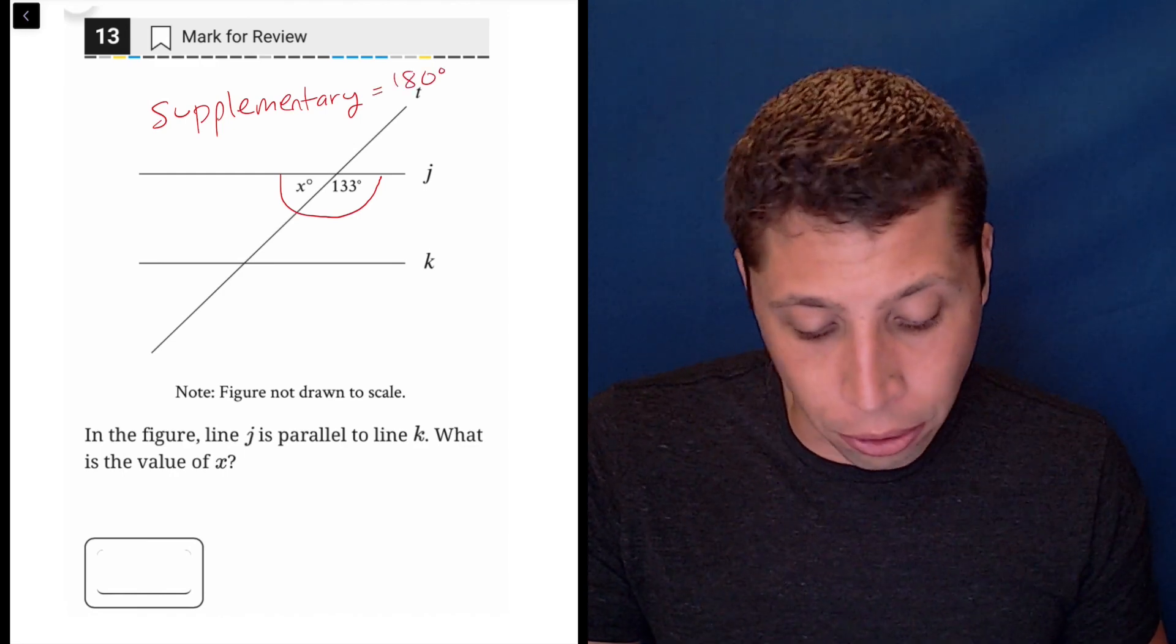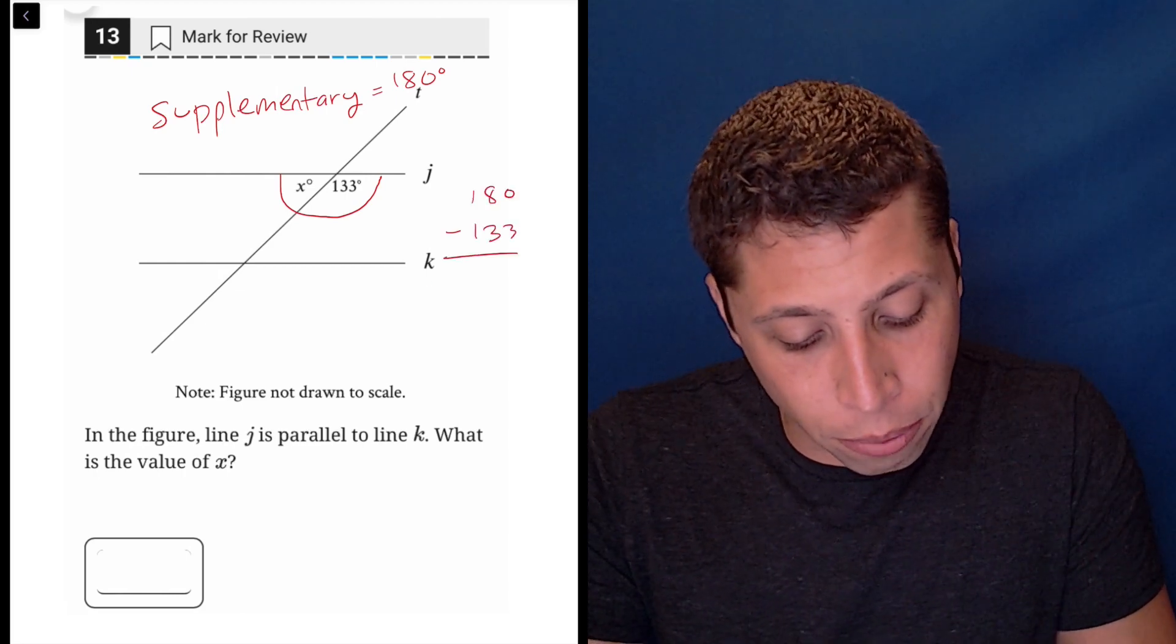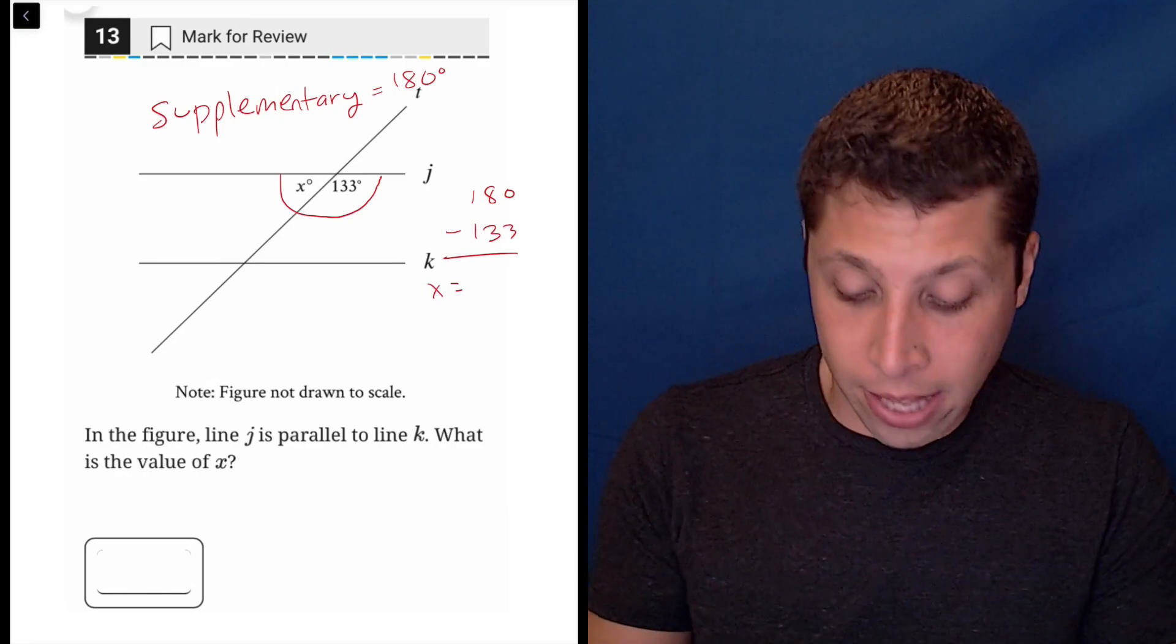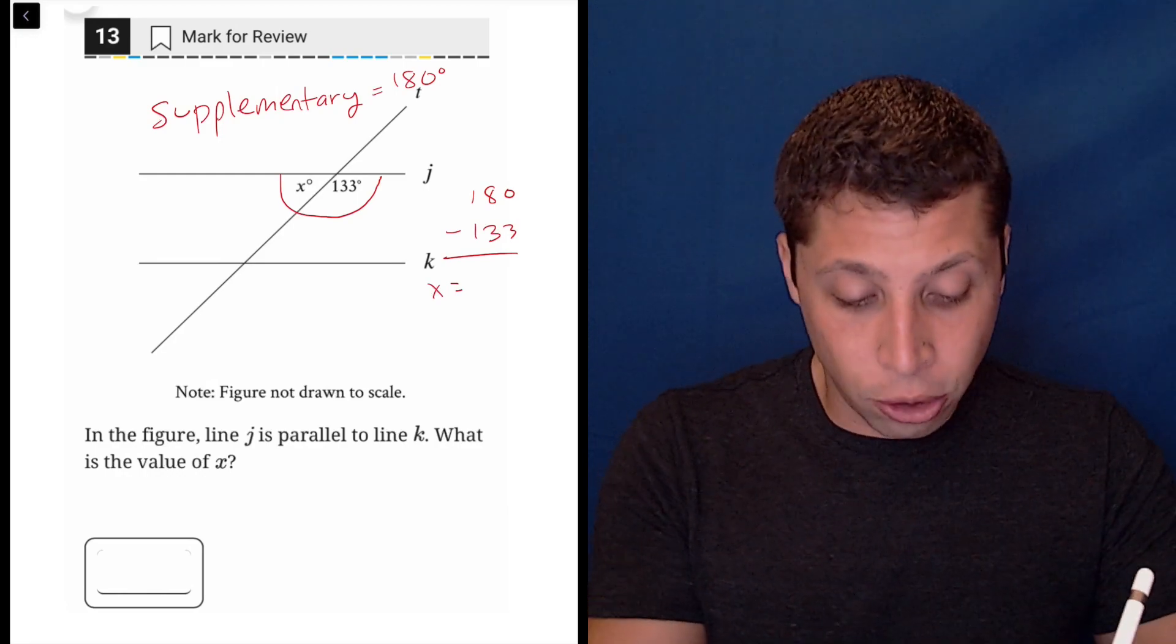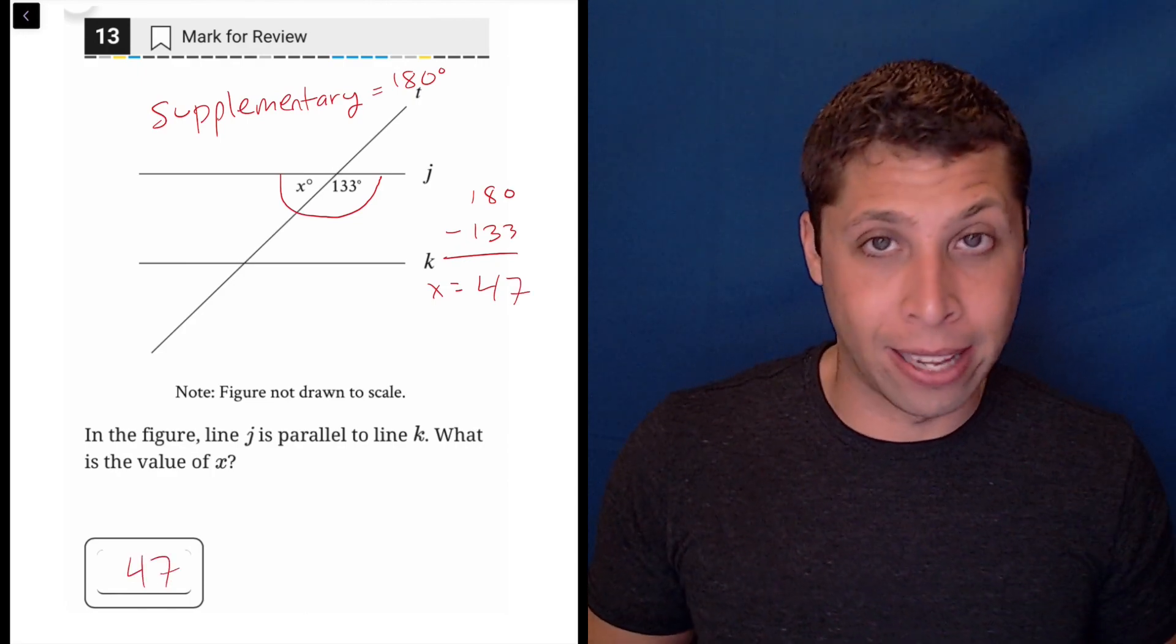So we've got 133 taken care of, so we're going to take 180 and subtract out the 133, and that will get us that x is equal to 47, and 47 then is the answer.